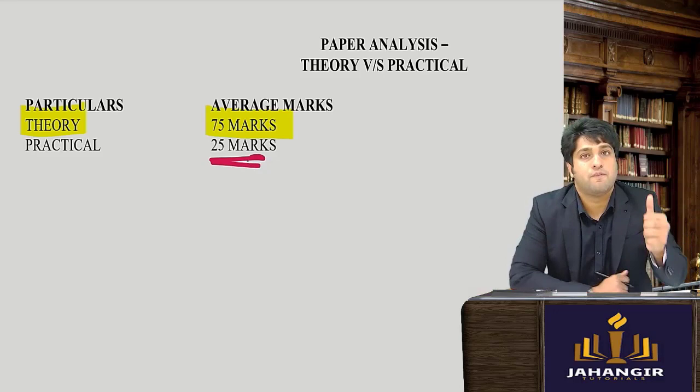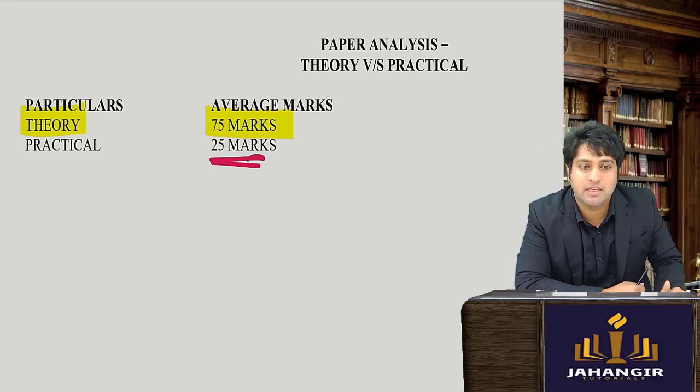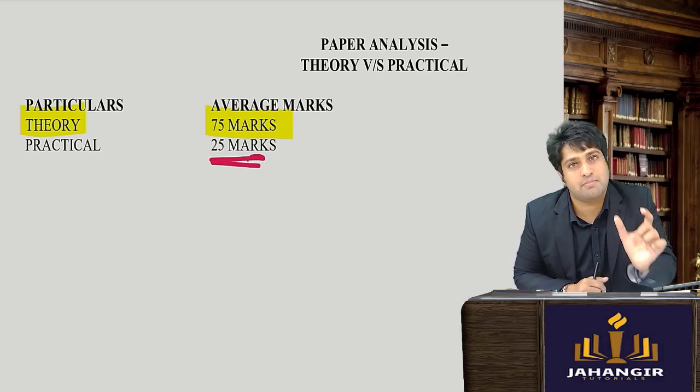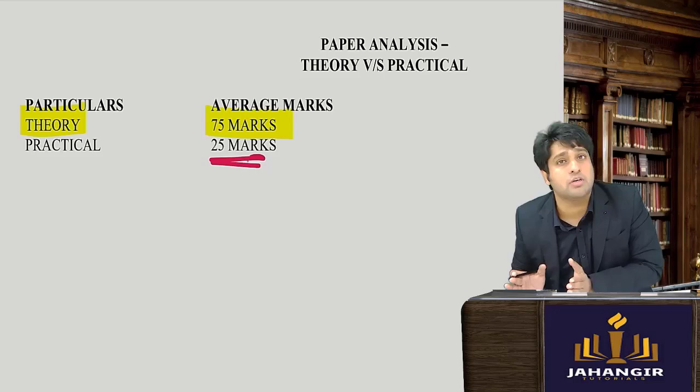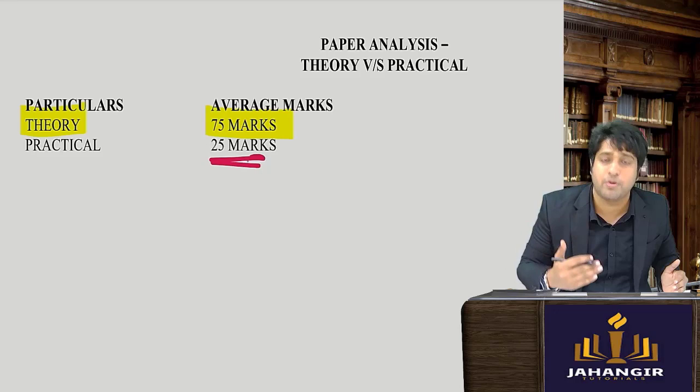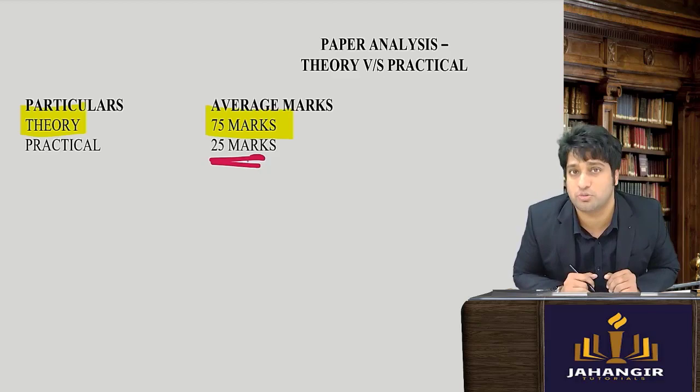The key hack for FTSM: theory in the paper is 75 marks and practical is only 25 marks — this is a consistent standard. The theory comes from both Part A and Part B, but the practical 25 marks is only from Part A. So focus not only on the practicals but also on theory, which has been covered in proper detail from the module along with sums — both must be studied.